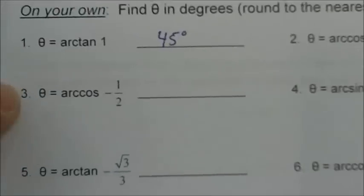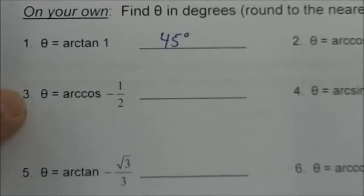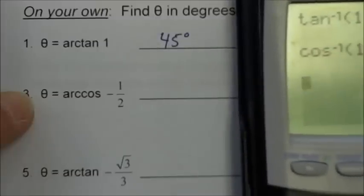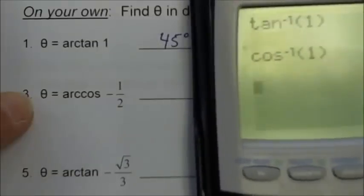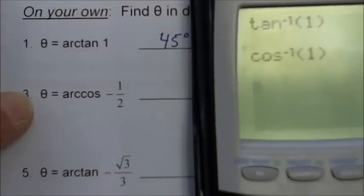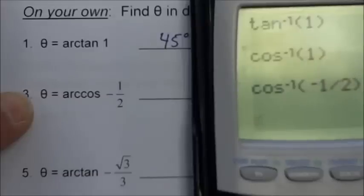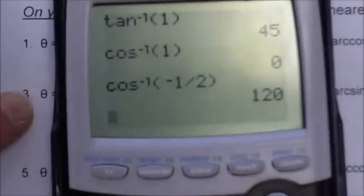Number 3: theta equals arc cosine of negative 1 half. So what angle has a cosine value of negative 1 half? 2nd cos, negative 1 half — 120 degrees.